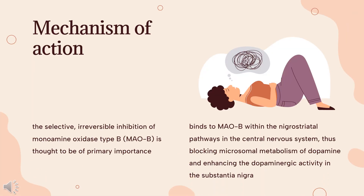Mechanism of Action: Tranylcypramine irreversibly and non-selectively inhibits monoamine oxidase (MAO). Within neurons, MAO appears to regulate the levels of monoamines released upon synaptic firing. Since depression is associated with low levels of monoamines, the inhibition of MAO serves to ease depressive symptoms, as this results in an increase in the concentrations of these amines within the CNS.